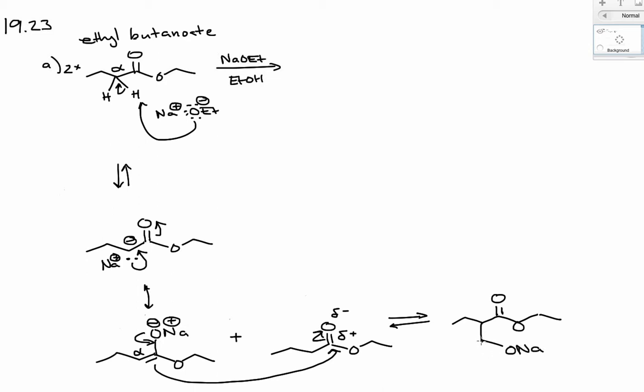We're forming this tetrahedral intermediate. We've gone from sp2 to now sp3 hybridized. This carbon is bearing two oxygens. In this form it wants to rehybridize back to the sp2 hybridized carbon.